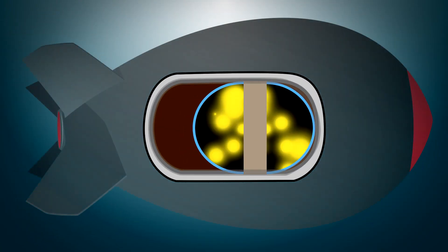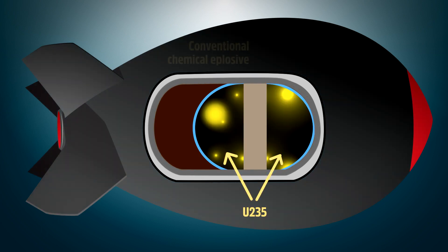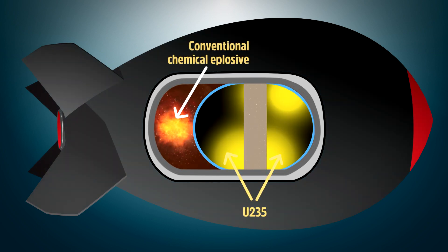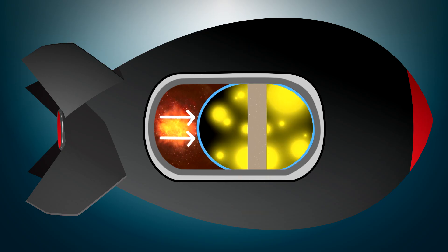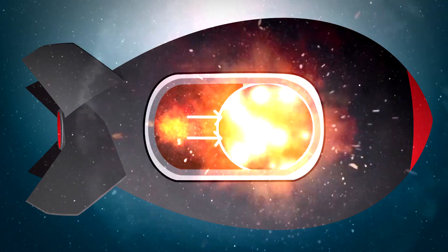In an atom bomb, two subcritical masses are slammed together, usually with a conventional bomb contained inside the outer bomb. This conventional explosive charge inside the container initiates the chain reaction to produce your typical mushroom cloud.